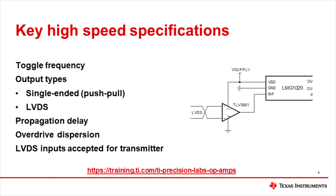For the GaN FET transmitter, it was required to supply a single-ended output to the input of the LMG-1020 GaN FET driver, and also to drive the transmitter with LVDS inputs. For the receiver side, we will assume the downstream device will require a single-ended output. If the downstream device requires LVDS outputs, then a high-speed comparator such as the TLV3604 can be used instead of the selected TLV3601. The TLV3601 was selected to meet these important design requirements for both circuits. For more information about these comparator specifications, please access the TI training link in red.